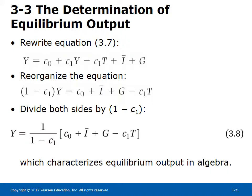Solve for equilibrium Y by taking all Y terms on one side: Y minus C1·Y equals C0 minus C1·T plus I plus G. Dividing both sides by 1 minus C1, equation 3.8 gives the value of equilibrium output. Equilibrium income is the product of autonomous spending and a multiplier. The value of the multiplier depends on the marginal propensity to consume. The multiplier arises because consumption is affected by income. Suppose there is an increase in G — it leads to an increase in production, which leads to an increase in income, which leads to an increase in consumption, then further increases in production, income, and consumption, and so on. The multiplier captures this effect.